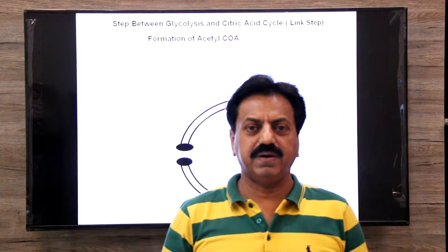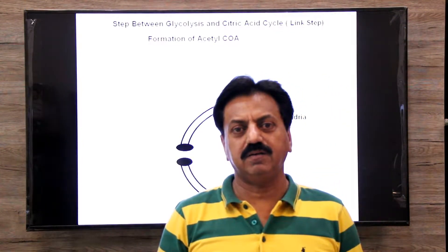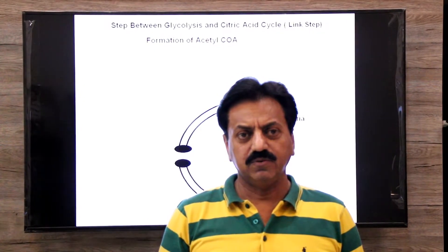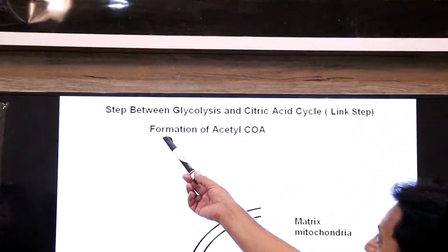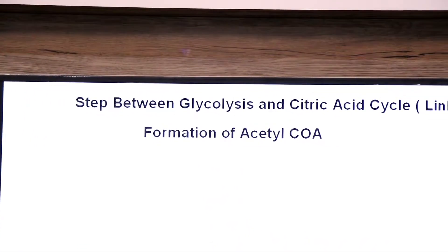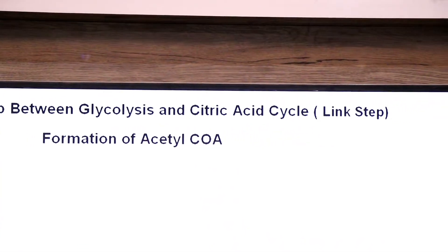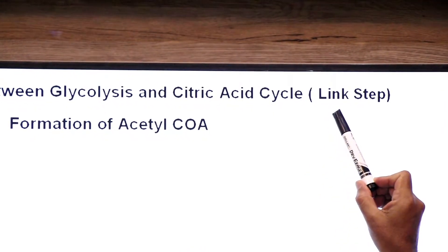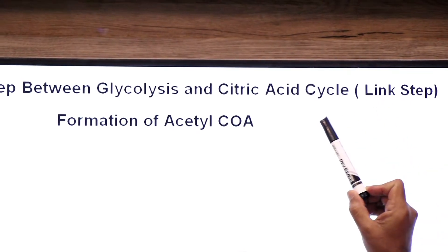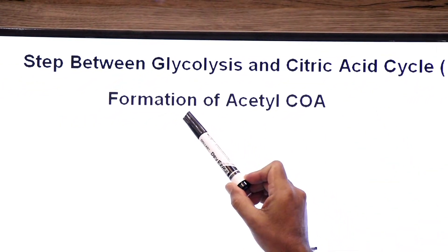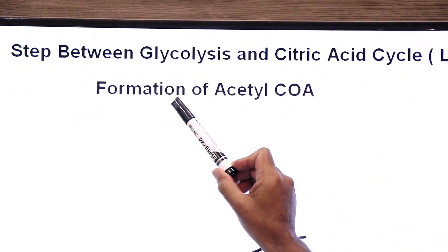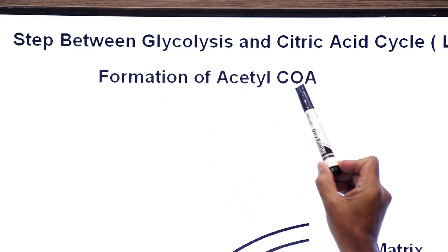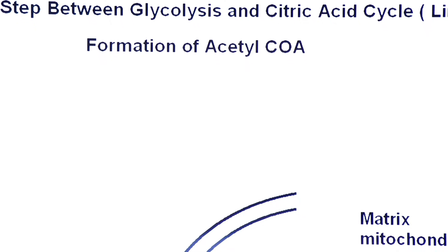Hello guys, welcome back. We are moving with chapter number 11, Bio-Energetics, first year. Today we will discuss about the state between glycolysis and citric acid cycle, also called the link state. During the link state, there is formation of a two-carbon compound known as acetyl coenzyme A — the formation of acetyl coenzyme A.